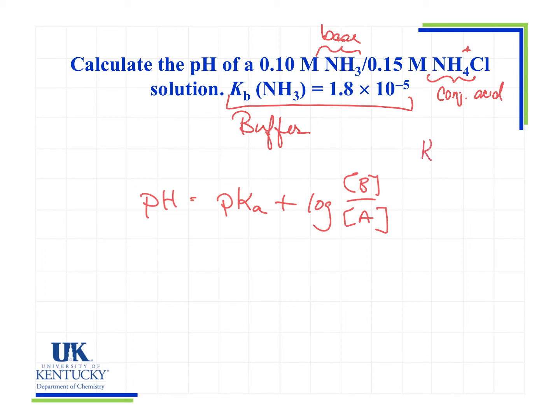We know that the Ka is Kw divided by Kb. Kw is 1 times 10 to the minus 14 divided by 1.8 times 10 to the minus 5. And that will give me 9.55 times 10 to the minus 10.